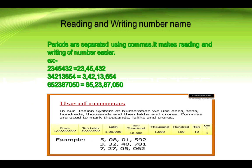Let's read these numbers. First number: five crore eight lakh one thousand five hundred ninety-two. Second number: three crore thirty-two lakh forty thousand seven hundred eighty-one. Third number: seven crore twenty-seven lakh five thousand sixty-two. See how easily you can read the number names using commas.